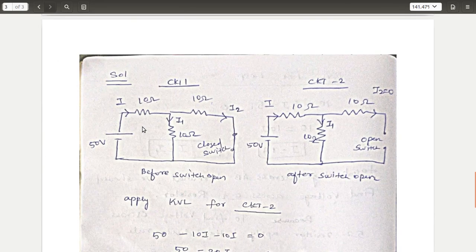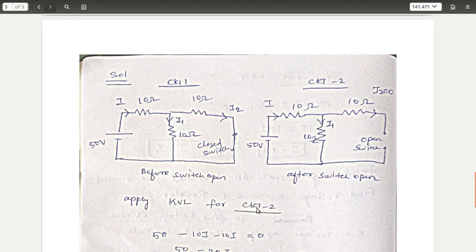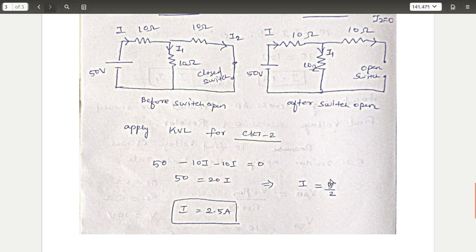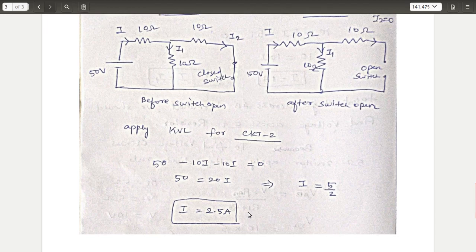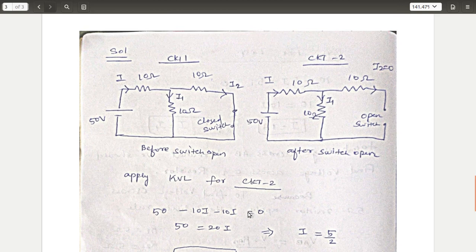For your understanding, I have drawn two circuits — one with a closed switch and one with an open switch. When the switch is open, you only need to find I1 = I. Applying KVL: 50 − 10I − 10I = 0, so I = 2.5 amperes. If you have any doubts about these problems, please comment. We will meet in the next video — thank you.